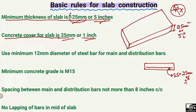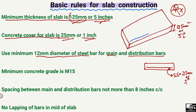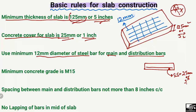The next rule is the minimum diameter of the steel bars for main reinforcement and distribution bars. The steel bars placed inside the slab — the diameter of these bars in both the main bar and the distribution bar — should be at least 12 mm. You should not place bars with a diameter less than 12 mm in the main bars as well as in the distribution bars.